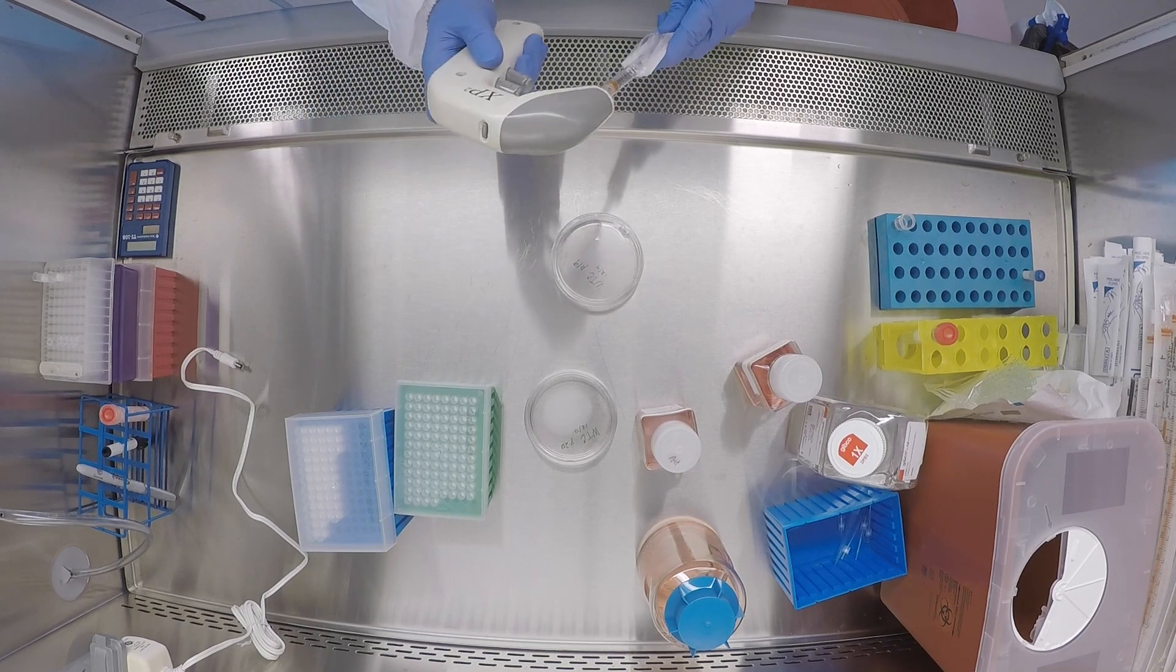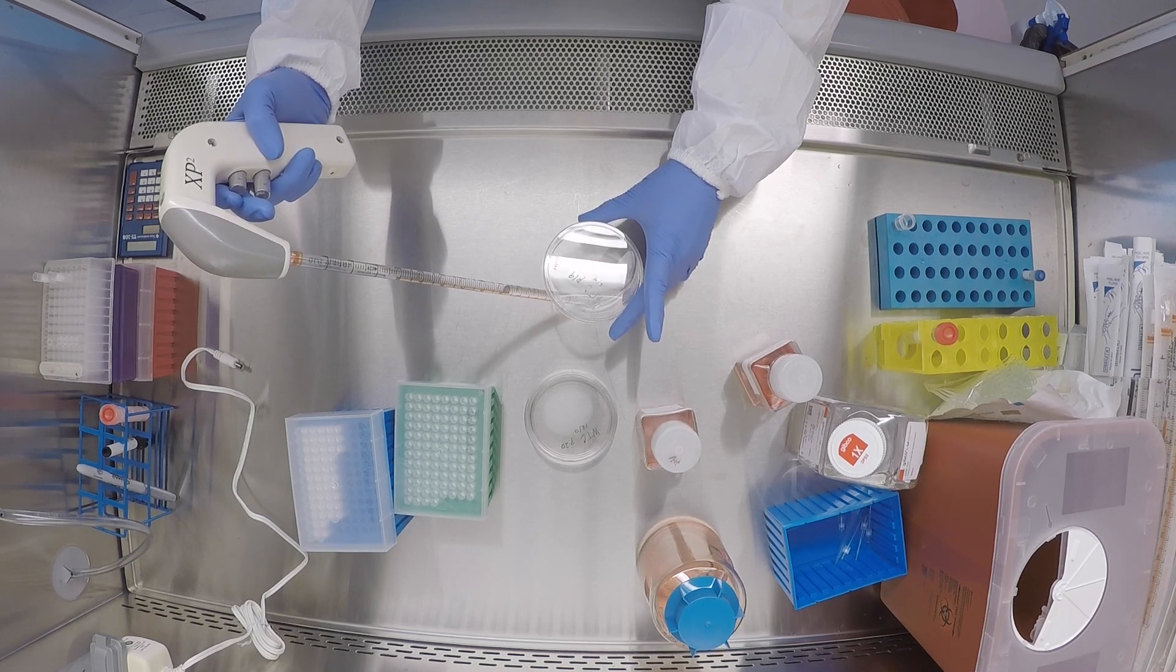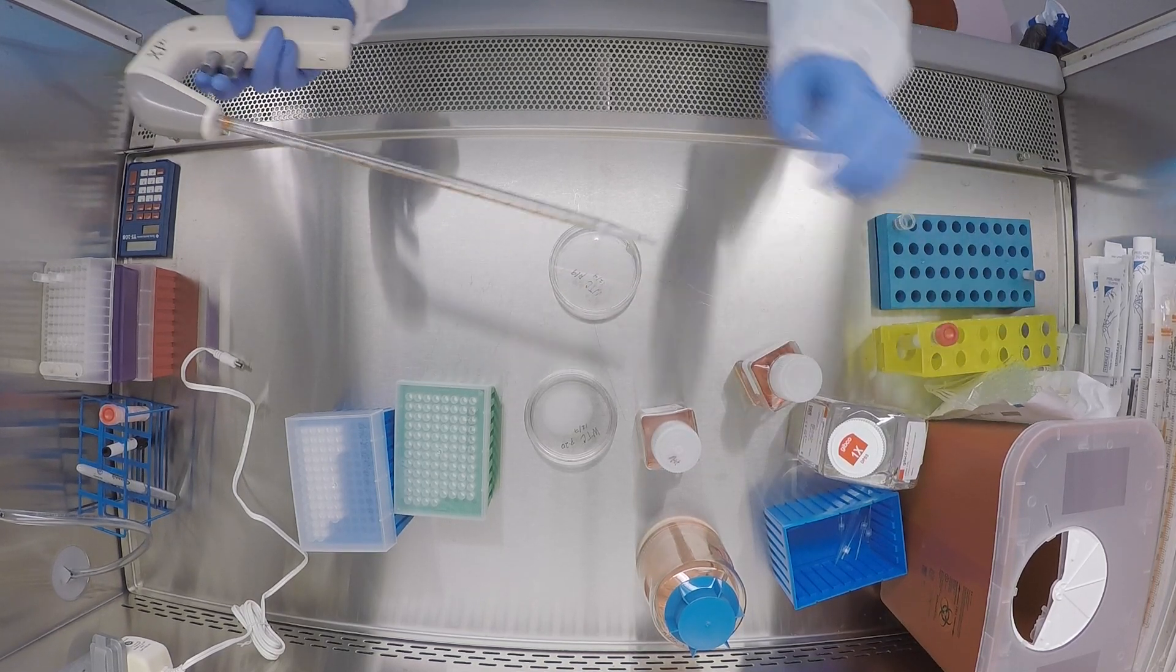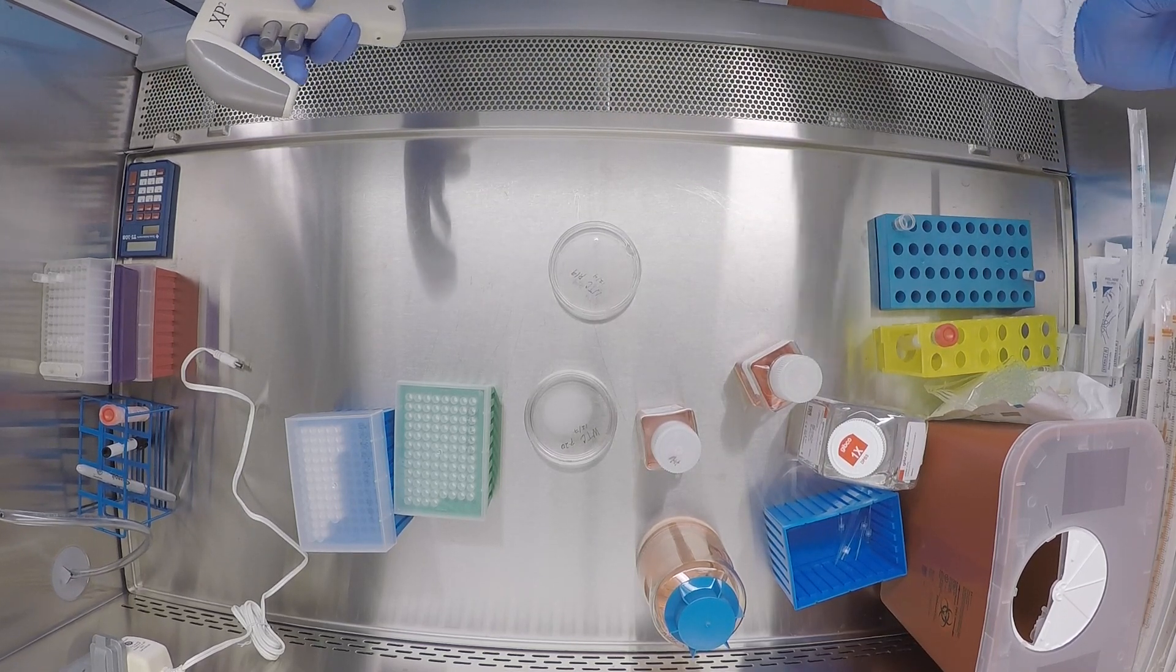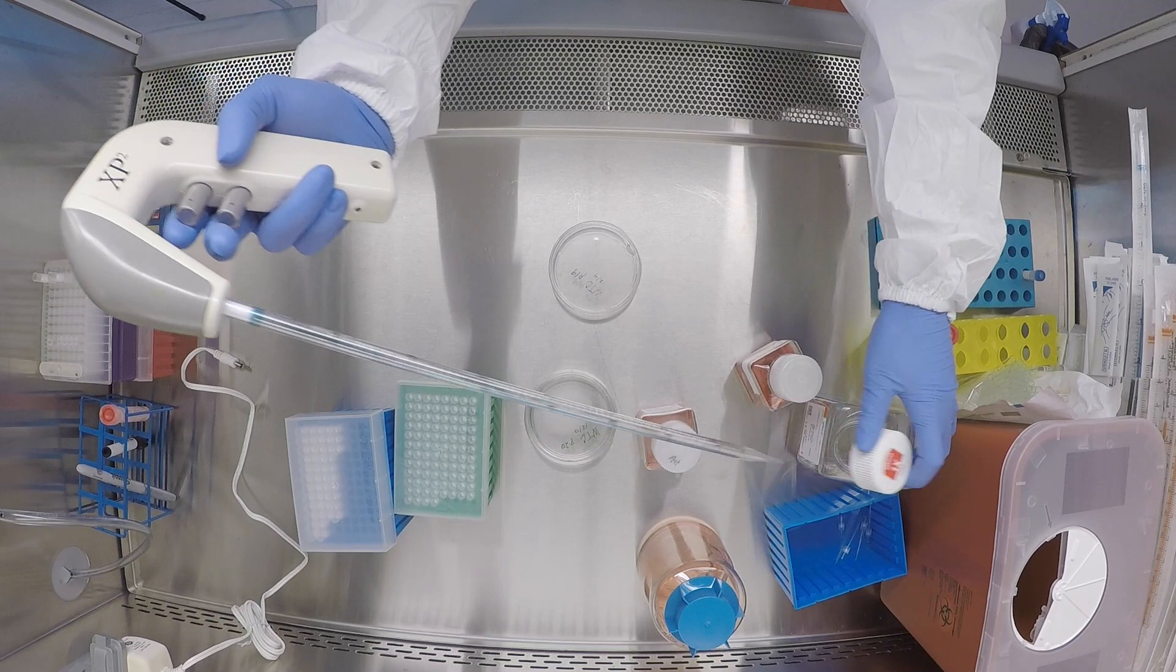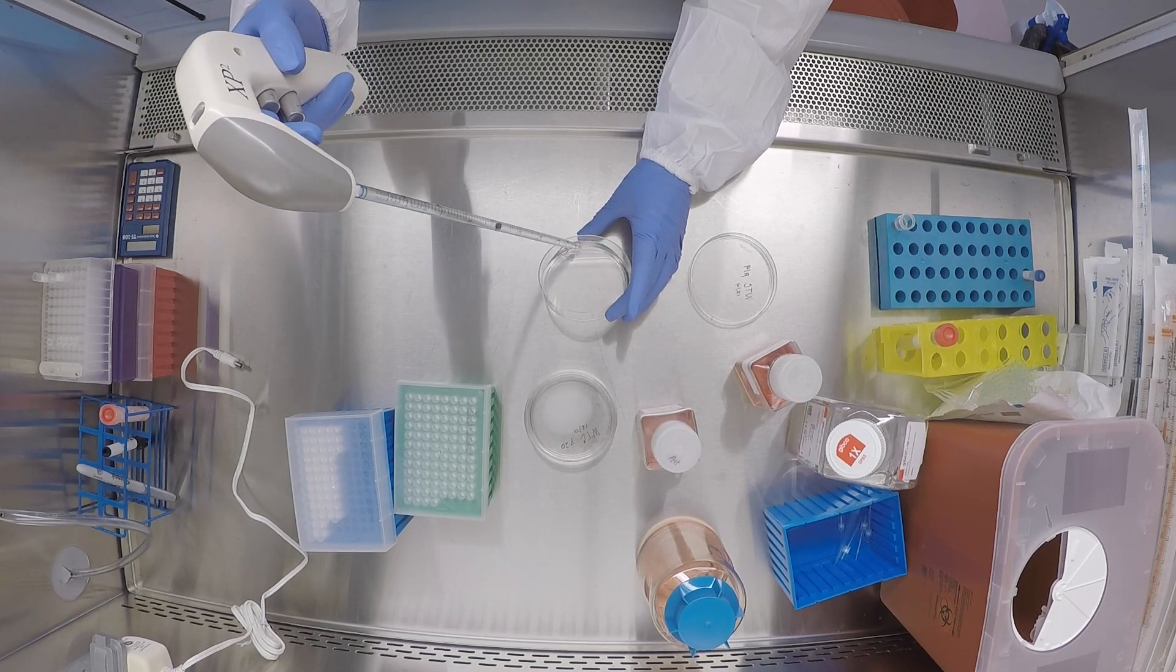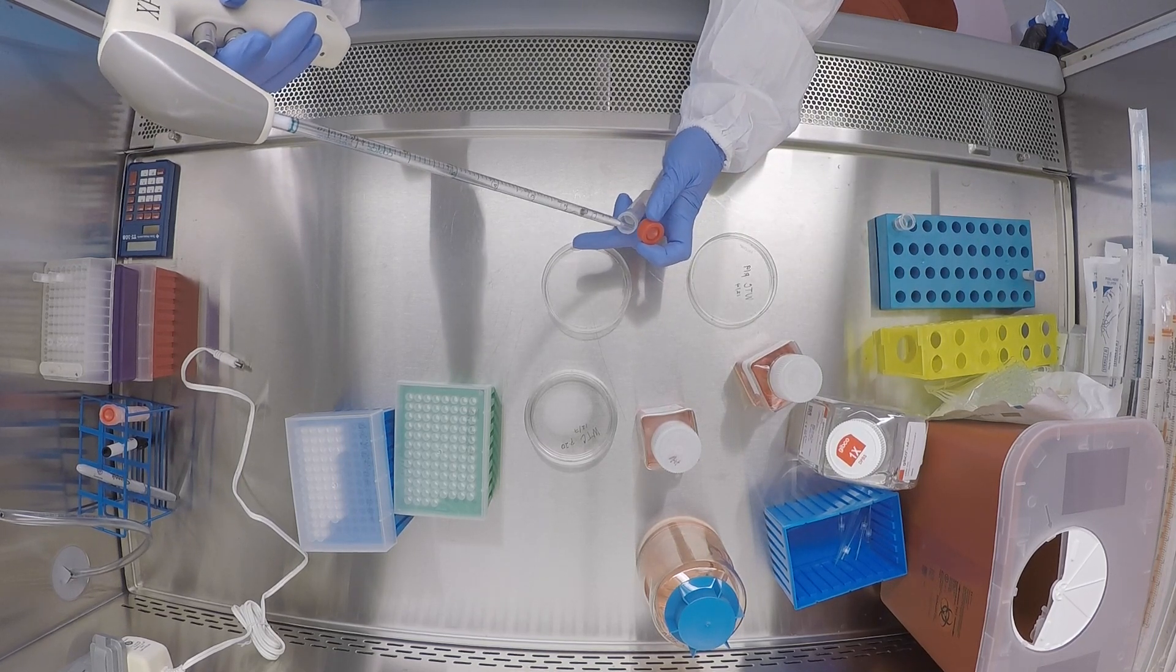So now I can take this volume and transfer it into a conical. Any time you're triturating the cells or transferring them, do your best to not create any bubbles in your liquid. I'm going to rinse the plate once with PBS to make sure that I get as many of the cells off the plate as I can, and I'll add that to the same tube.